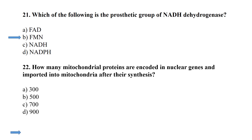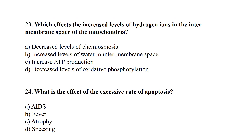How many mitochondrial proteins are encoded by nuclear genes and imported into the mitochondria after their synthesis? These are approximately 900 proteins that are nuclear-encoded and imported into the mitochondria.